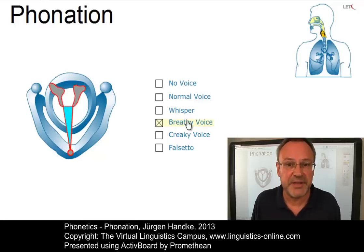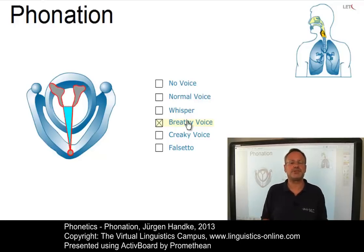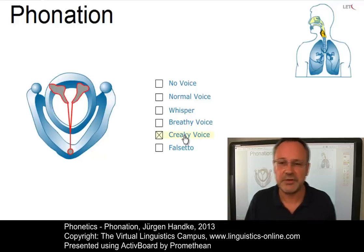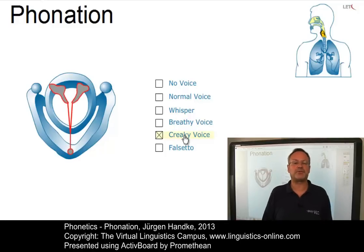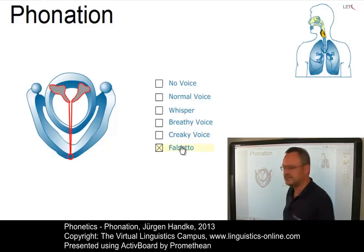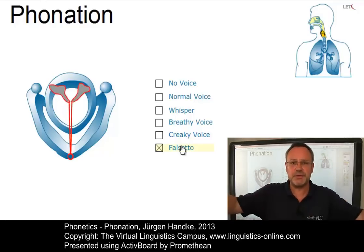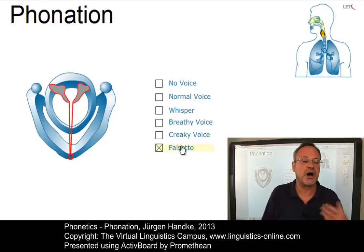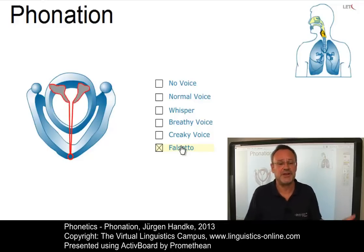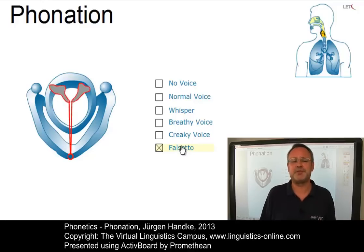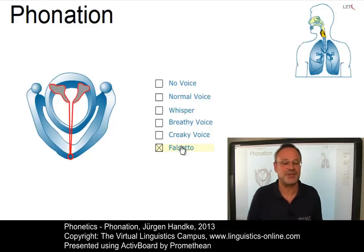In breathy voice, normal cord vibration is accompanied by some continuous turbulent airflow. Creaky voice is a phonation mode characterized by a low frequency of vibration of the vocal cords. And finally, falsetto is the phonation mode where the vocal cords are stretched longitudinally so that they become relatively thin in cross section. Thus falsetto is primarily heard as a phonatory setting in singing — as in the famous Bee Gees songs: 'night fever, night fever'.